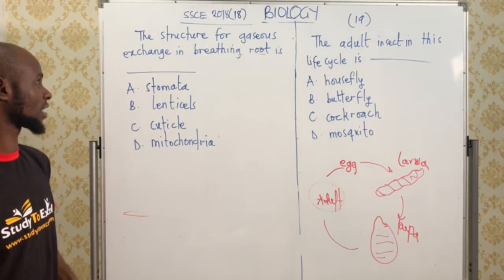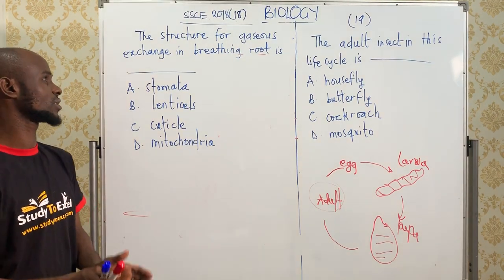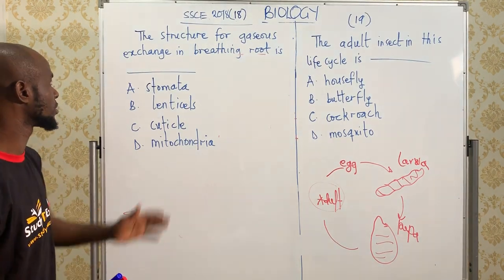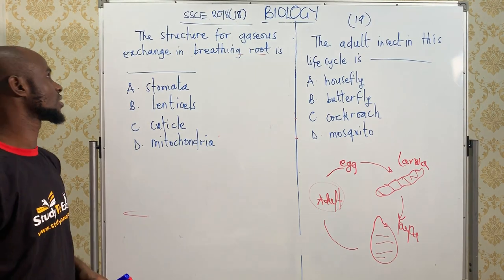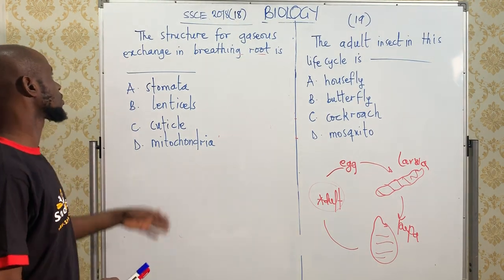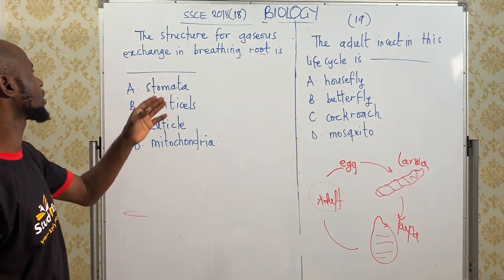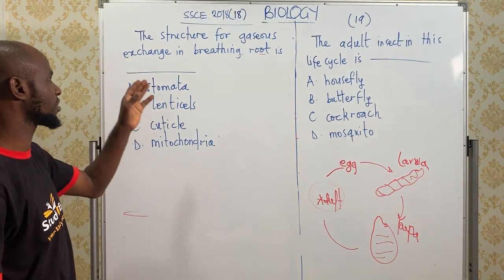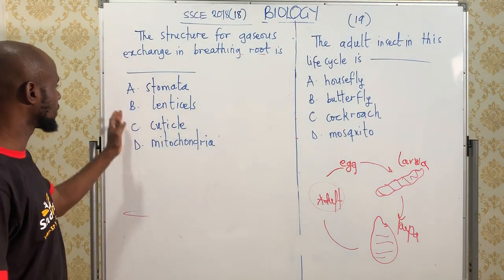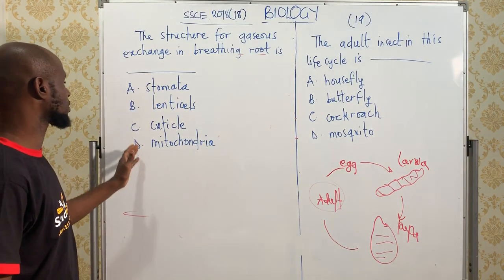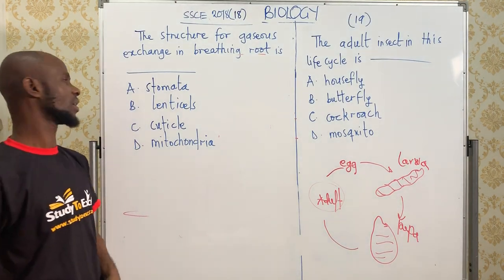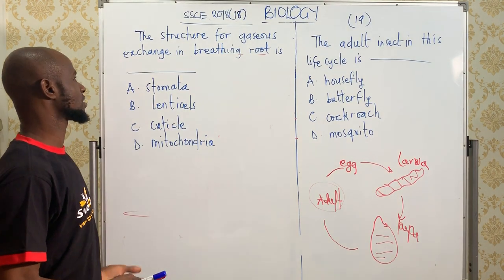Good day students and welcome to biology class. Today we continue our class on past questions and solutions, looking at the year 2018, question 18. The structure for gaseous exchange in breathing roots is: A, stomata; B, lenticels; C, cortical; and D, cortical nerve. So what's the answer?